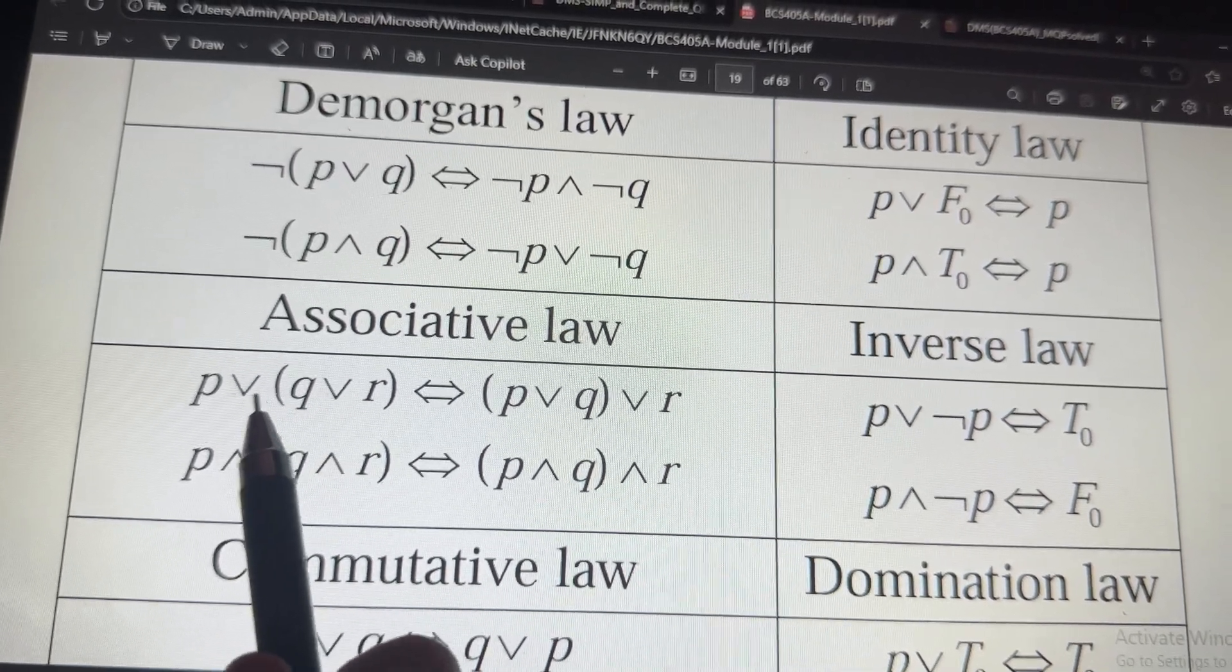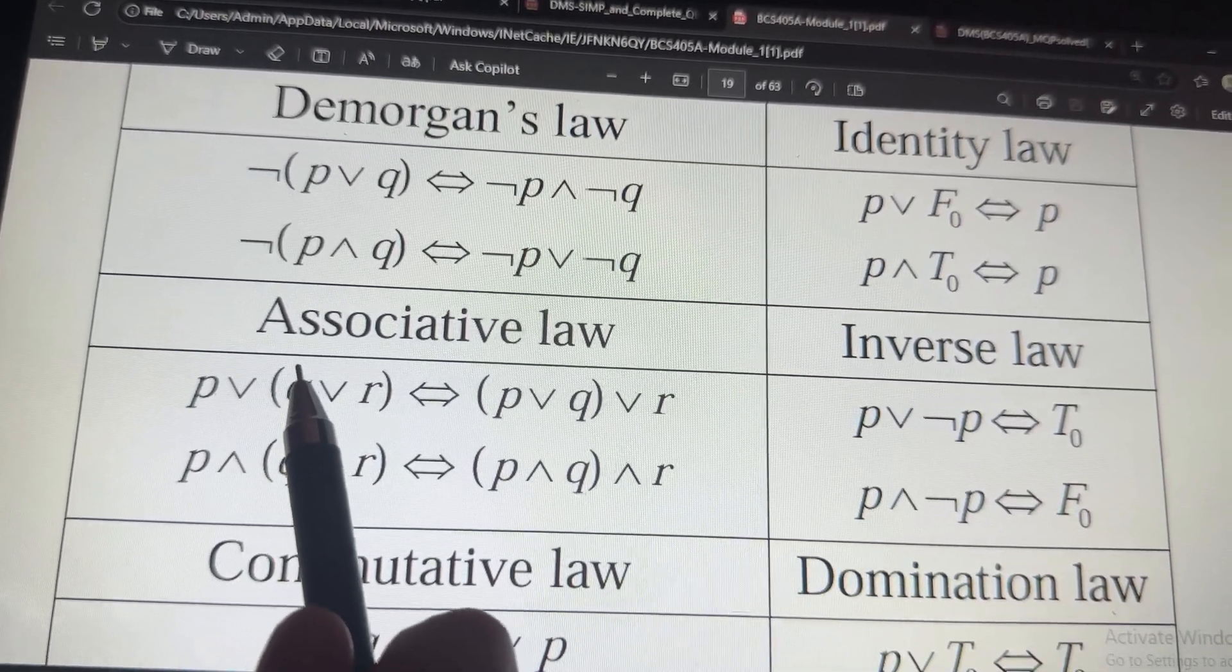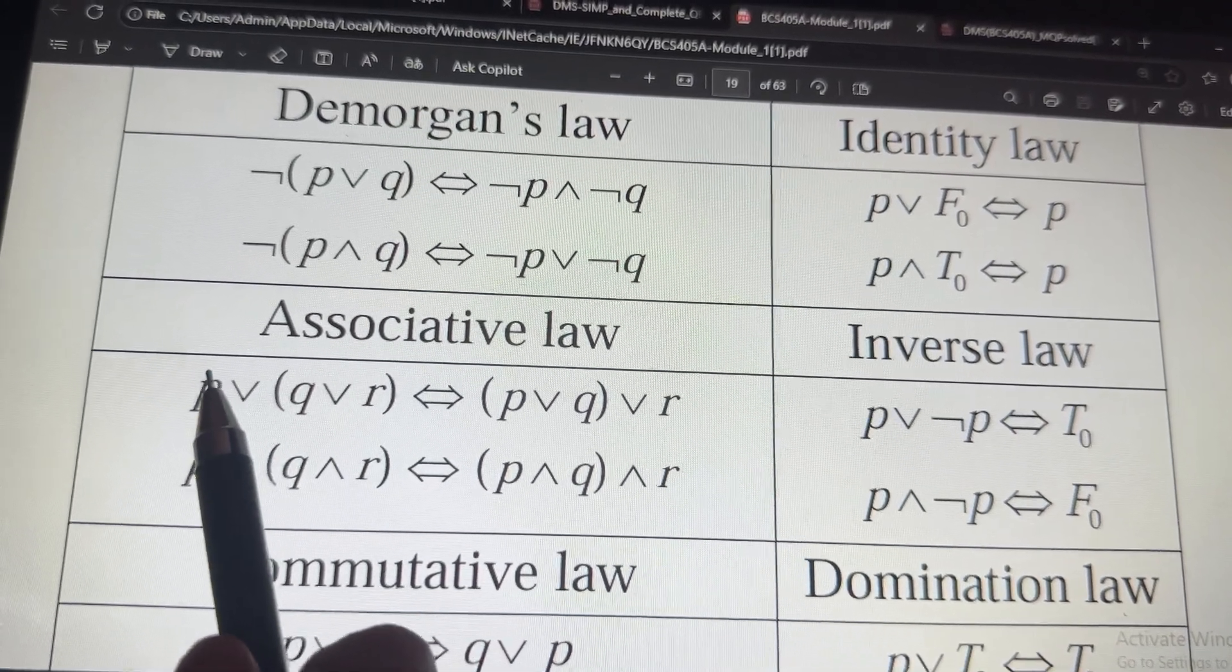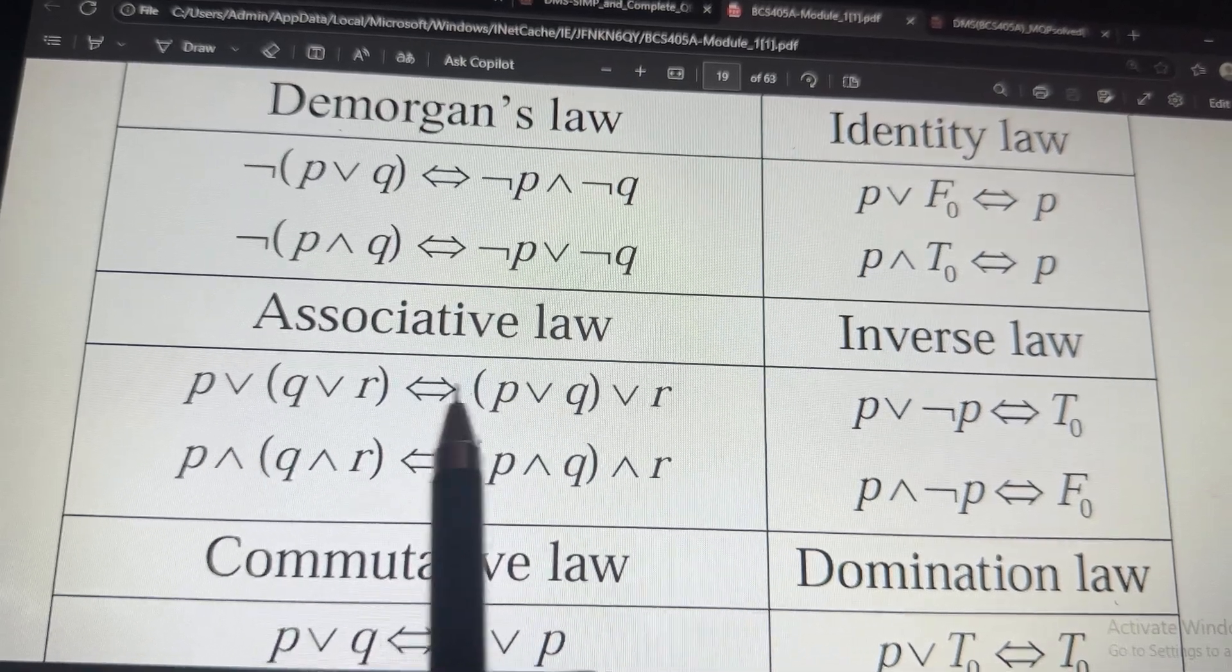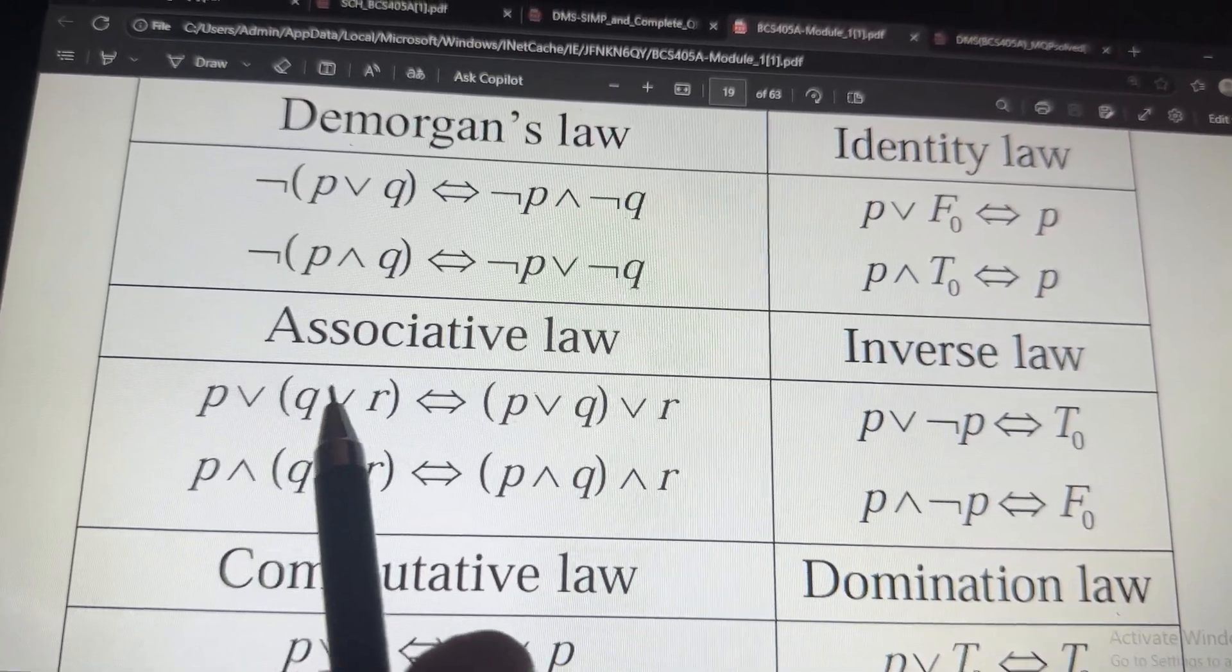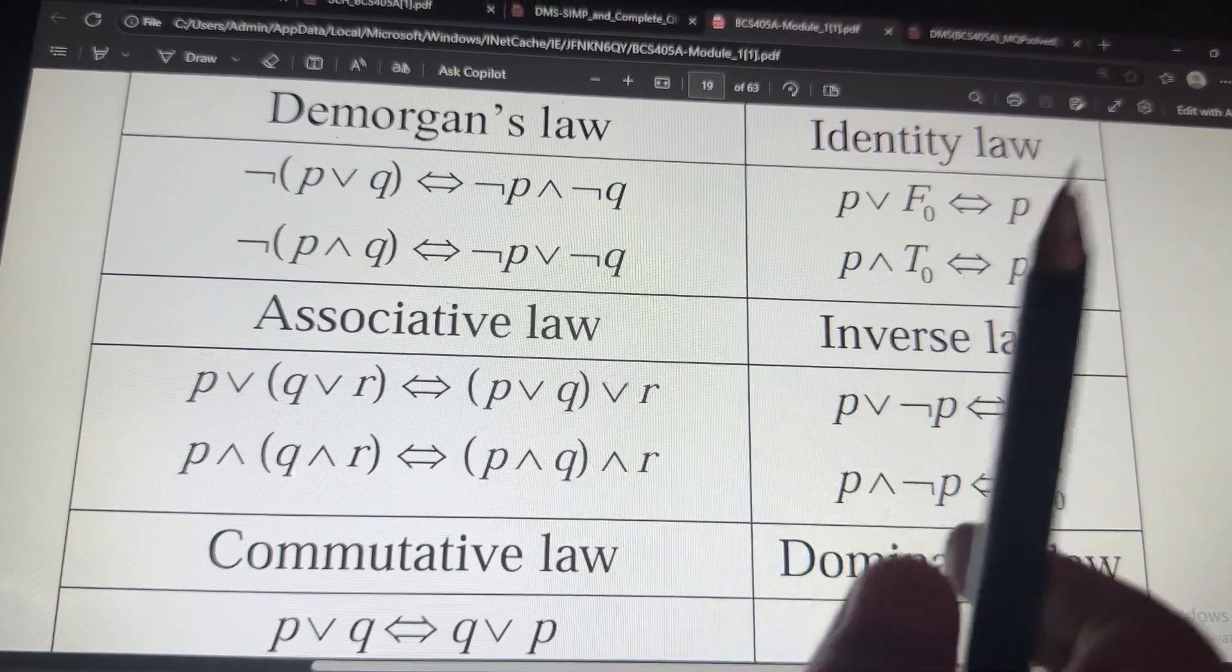So, if both same symbols are used, in question, if you are putting bracket here, in answer, you can put bracket for P and Q. Only bracket changing, if same symbols is there, then it is associative law.